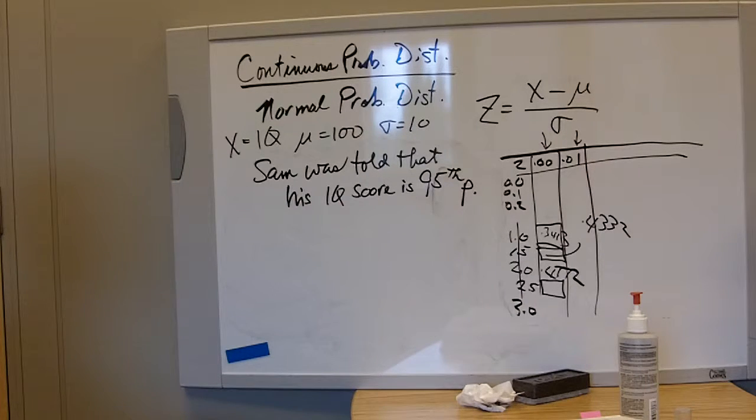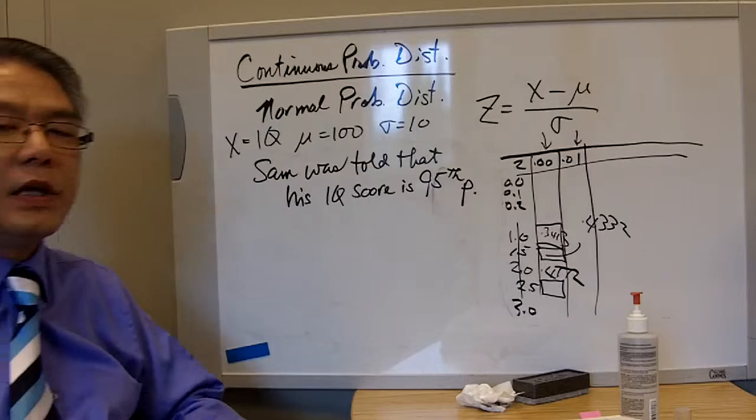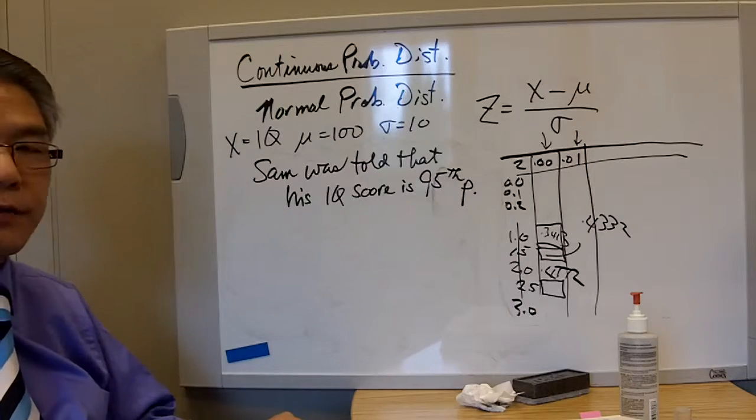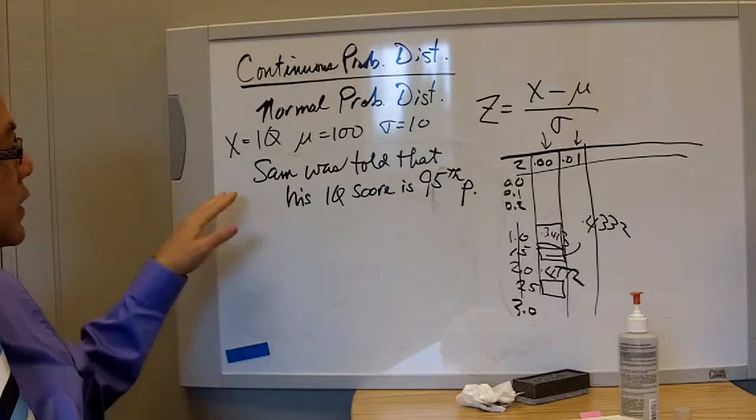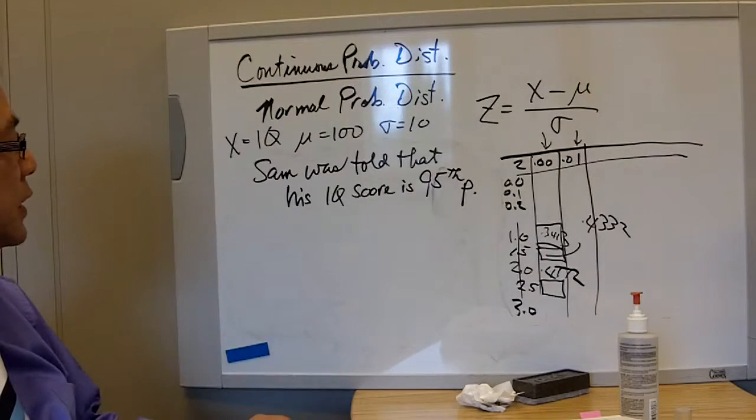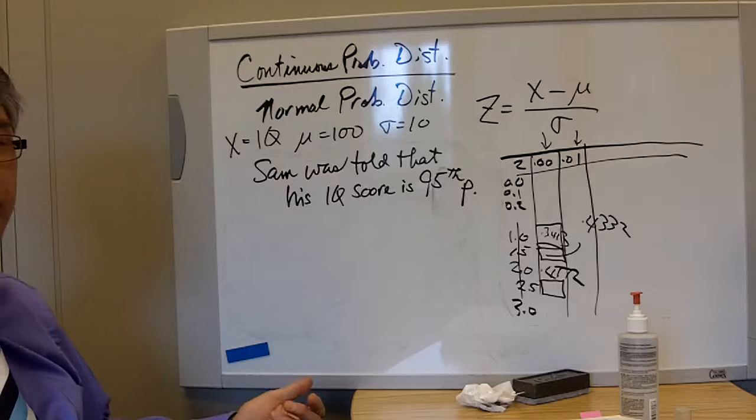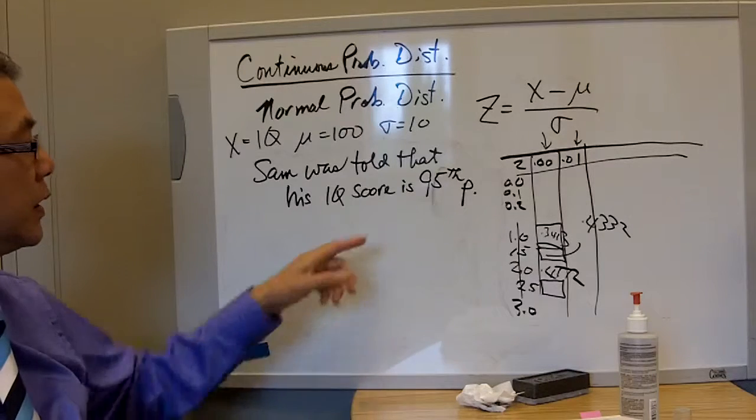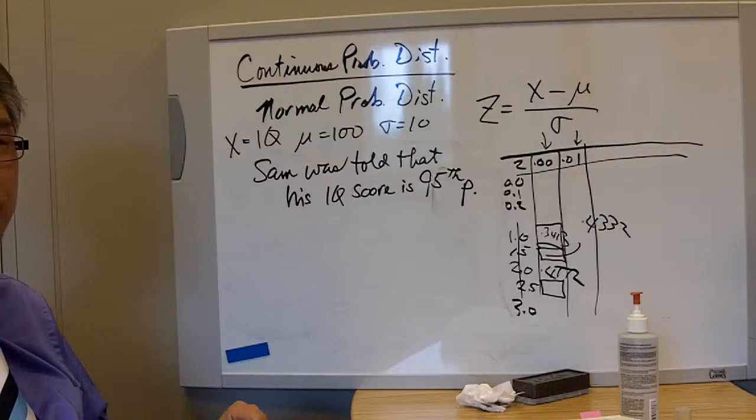when the IQ score has a distribution with a mean of 100 and a standard deviation of 10, is it possible for us to define the percentile equivalent, such as if Sam was told that his IQ score is at the 95th percentile - what exactly was his score?